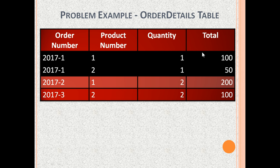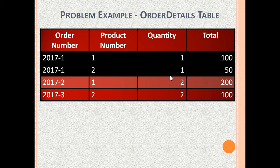In the Order Details Table, one order can have multiple items. Let's say Product Number 1 has a price of $100 and Product Number 2 has a price of $50. Order Number 2017-1 has Product Number 1 with a quantity of 1, so the total is $100. The same Order Number 2017-1 also has Product Number 2 with a quantity of 1 and the total is $50, giving a grand total of $150.